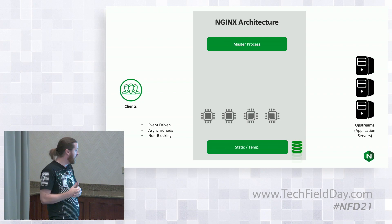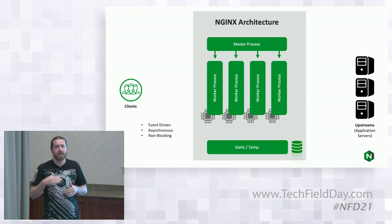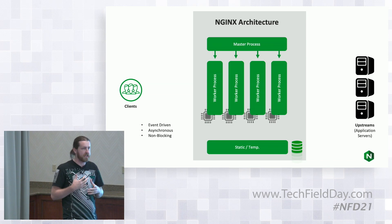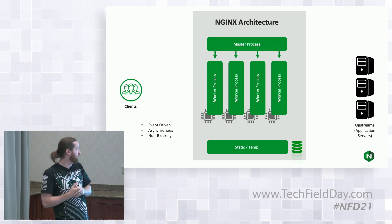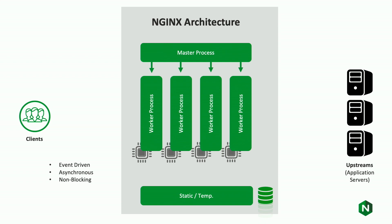At a high level, Nginx has a master worker process. The master worker process handles high-level operations like opening log files and managing network interfaces. The worker processes do all the heavy lifting. The cool thing about Nginx worker processes is they can be dedicated to specific CPUs using CPU affinity. Each worker runs an event-driven looping process, constantly accepting new connections, processing requests, and doing all the heavy lifting that Nginx is good at.